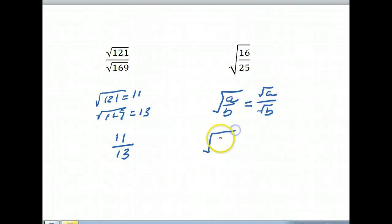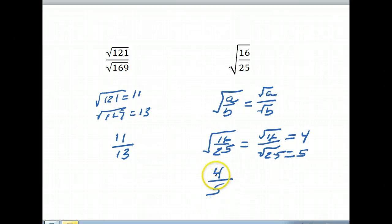the square root of 16 over 25 is equal to the square root of 16 over the square root of 25. The square root of 16 is 4. The square root of 25 is 5. So what we have is the square root of 16 over 25 is 4 fifths.